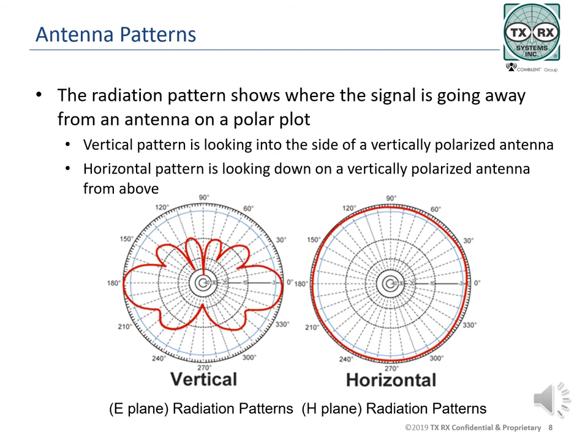The horizontal or H-plane pattern is the pattern of the signal as viewed from the top down on the antenna or from the bottom underneath the antenna looking up. These patterns are true for vertically polarized antennas and would be reversed if the antenna was horizontally polarized. Typically, vertically polarized antennas are used in land mobile radio applications. The patterns would be representative of a dipole antenna, collinear or other multiple element dipole arrays. The vertical pattern is less donut-shaped as more of the signal is directed away from the sides of the antenna and less is directed off the ends.